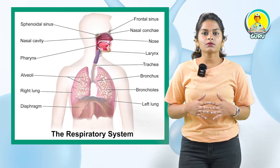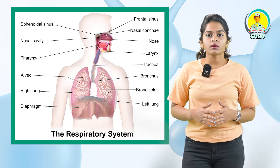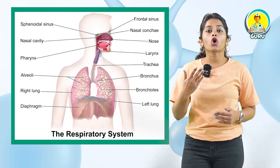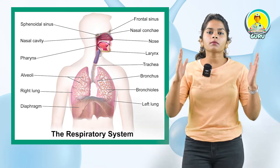The human respiratory system starts with the nostrils, then we have the nasal chamber, pharynx, larynx, trachea, bronchi, bronchioles, and alveoli which comprise our respiratory system. So one by one we are going to read about each and every structure. Nostrils act as a passage for the entry and exit of air.